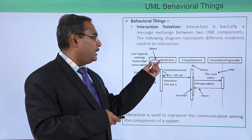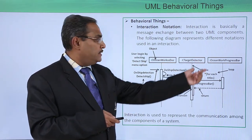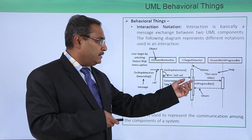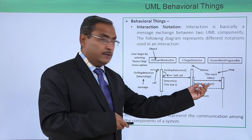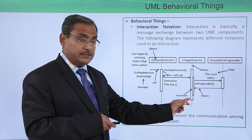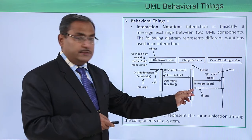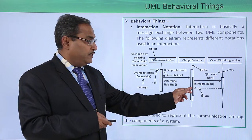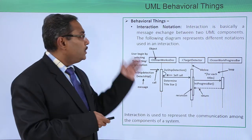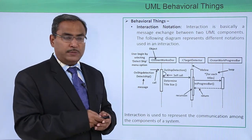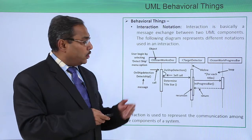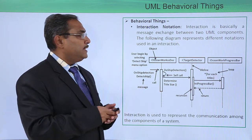Here we have a set of objects, and 'do shift detection' is a message being passed from one object to another. Then there is another message passed from that object to another object, denoting that its activation is for a longer period compared to this one. Whenever control is returned, this activation remains active. This is the interaction notation shown with a proper example. Later, in the separate chapter on sequence diagrams, we will discuss many more features of this interaction notation.